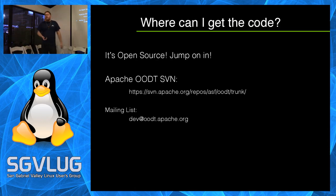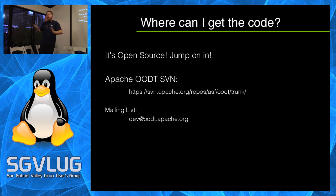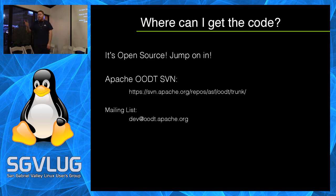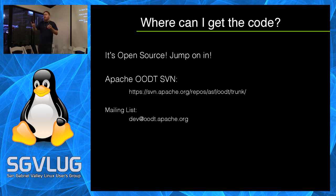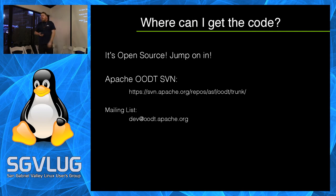I hope by this point you're all wondering where to get this stuff — it's open source, so just jump in. The Apache OODT community is very welcoming to anyone who shows up on the mailing lists. If you commit a patch or two of small bug fixes, you will become a member and committee member who decides where the project goes. Go to the SVN, get a version of the code, start playing around. If you have questions, ask on the mailing list.